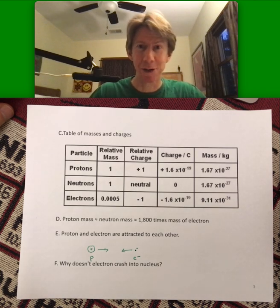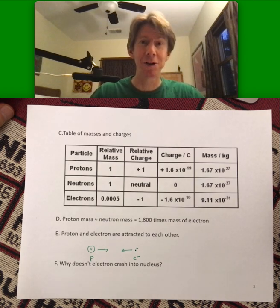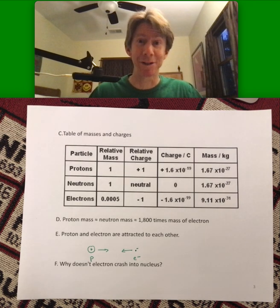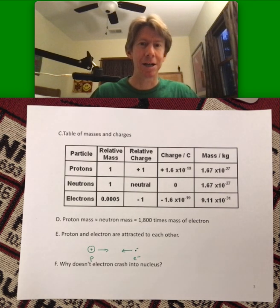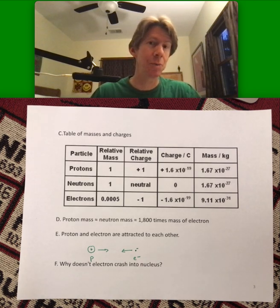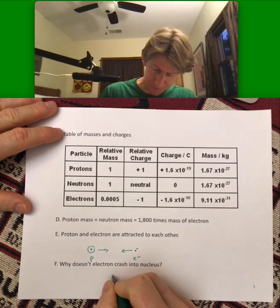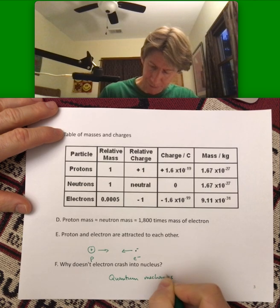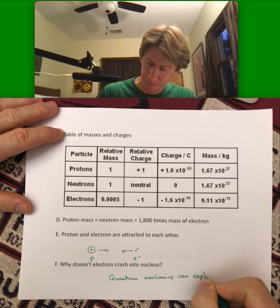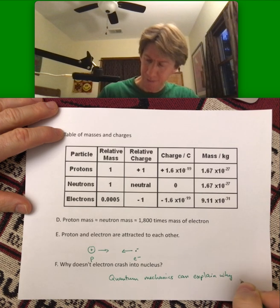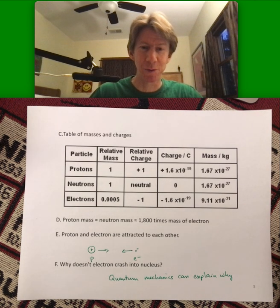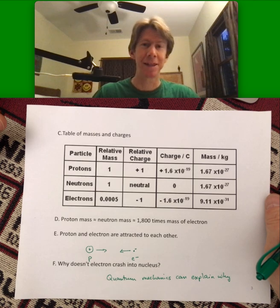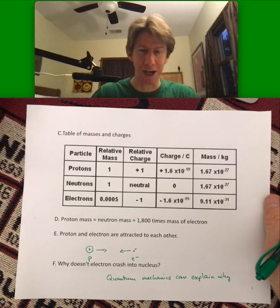To be honest, I don't even 100% understand it. I have learned to accept it, though. But the short answer is that to understand why it doesn't, you mostly have to understand quantum mechanics. Quantum mechanics can explain why. And that's well beyond the scope of what we're doing here. For now, we accept that the electrons, even though they're attracted to the nucleus, and we're going to talk about that a lot, they do not crash into the nucleus.